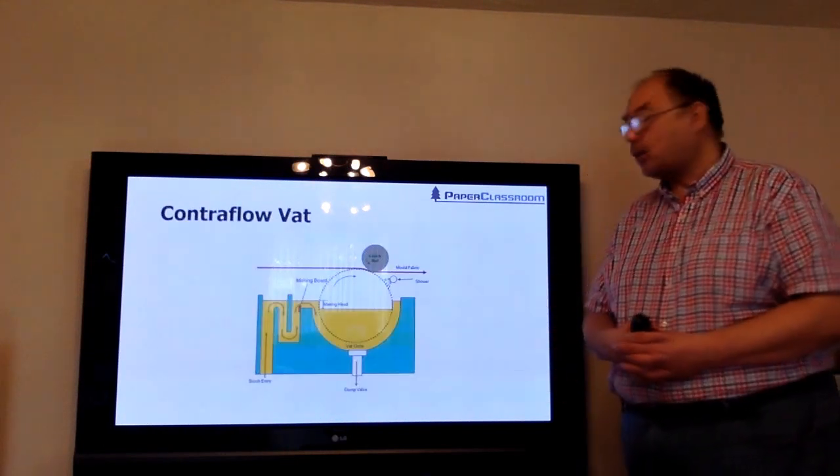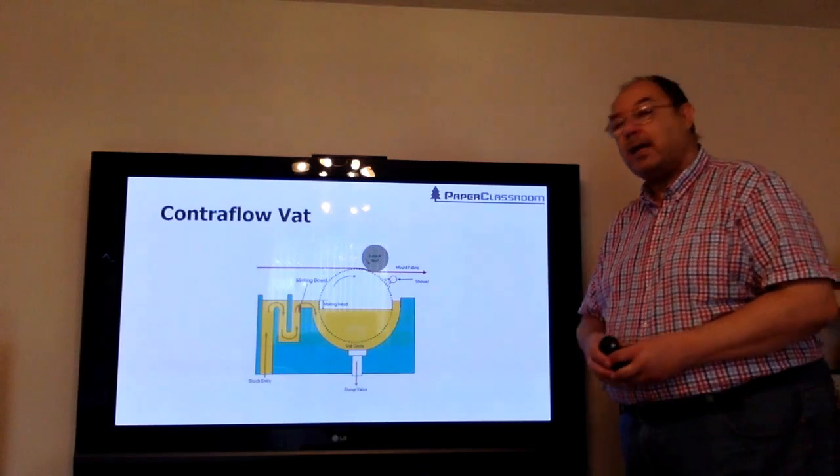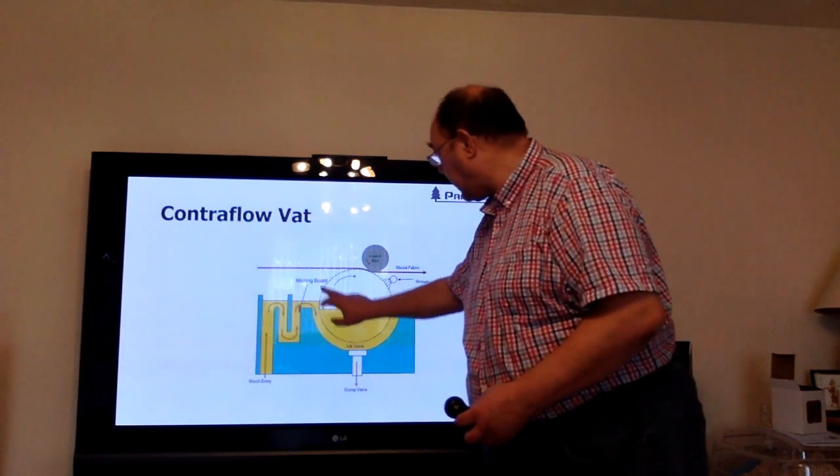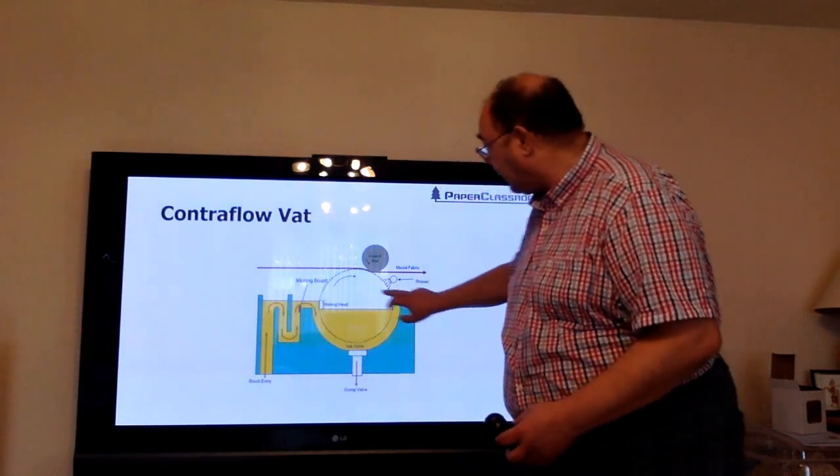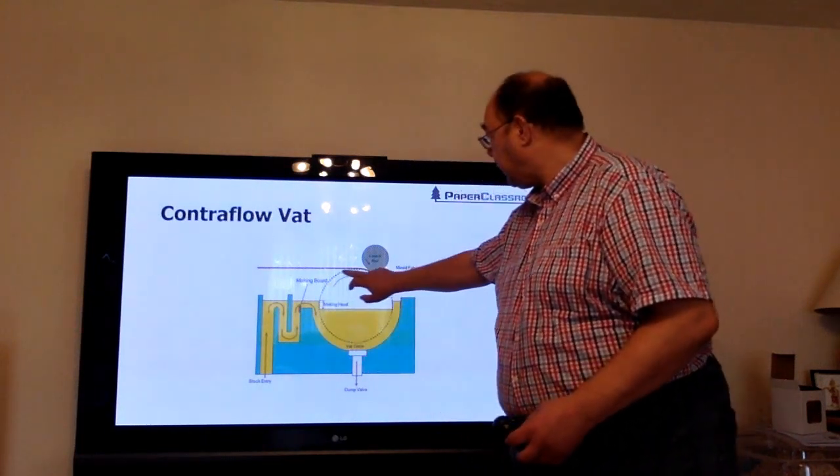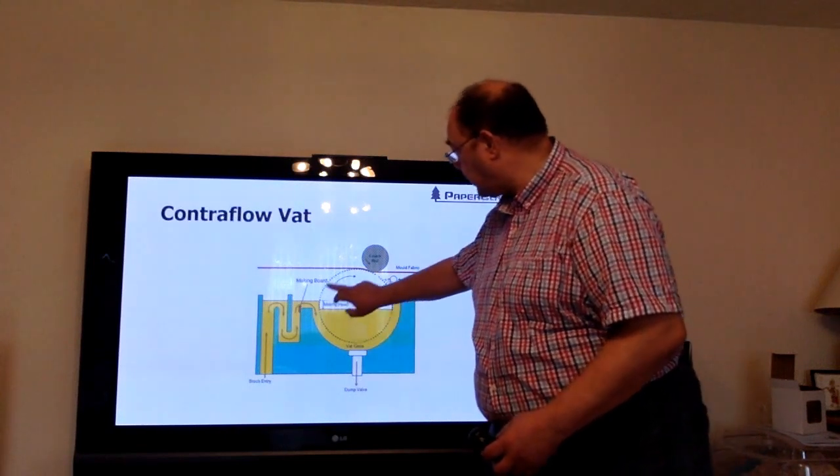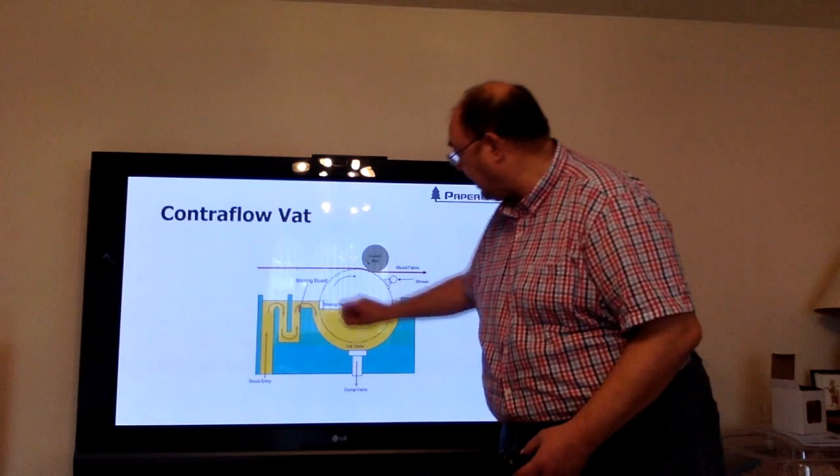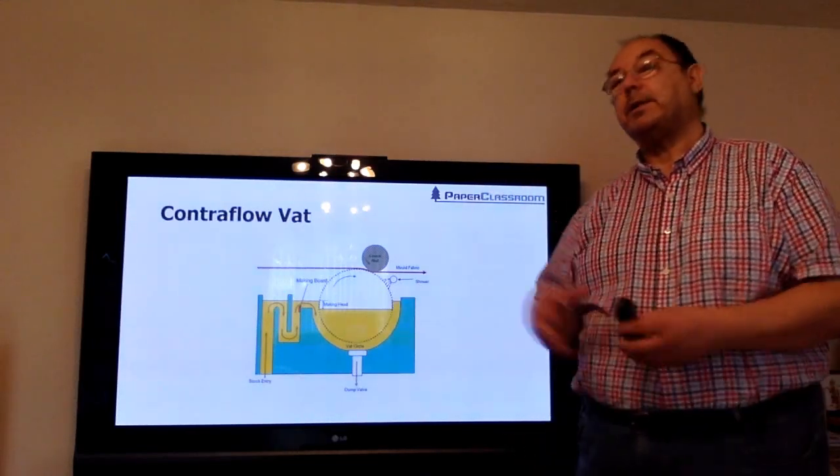This is a contraflow vat, so named because things go in opposite directions. Here we have the stock coming in and going this way around anti-clockwise, and here we have the making circle going this way clockwise. And again we're showing the making head, the pressure forcing the stock through.